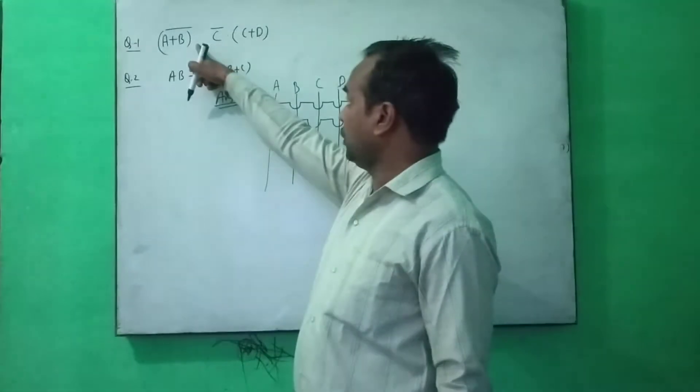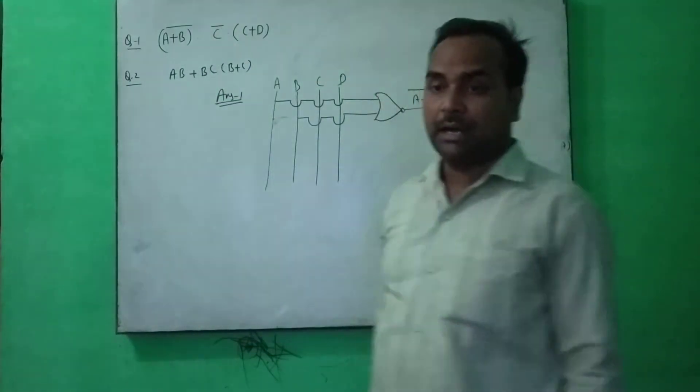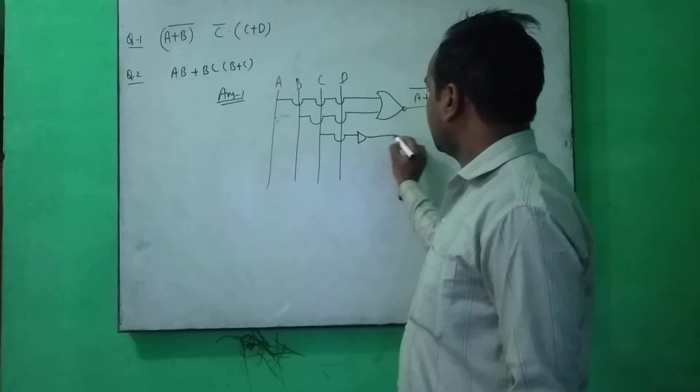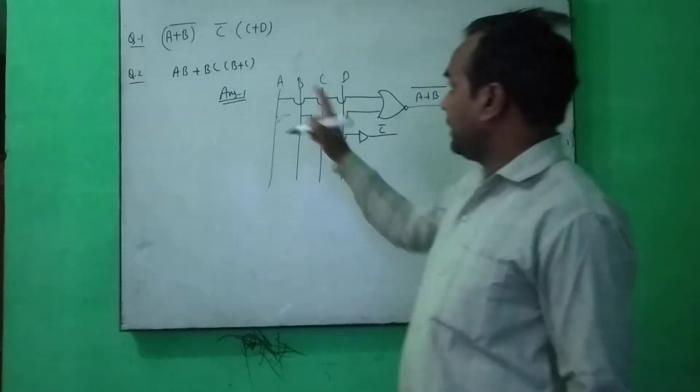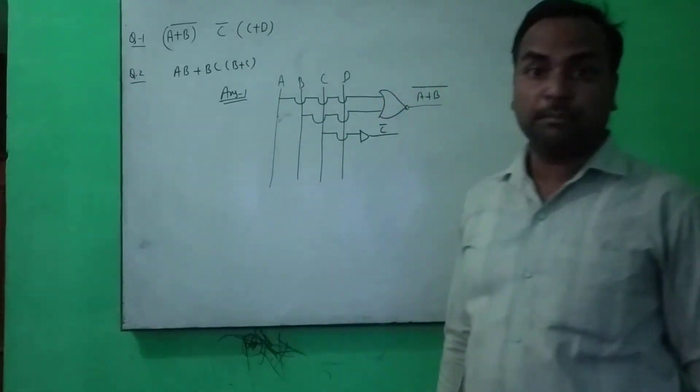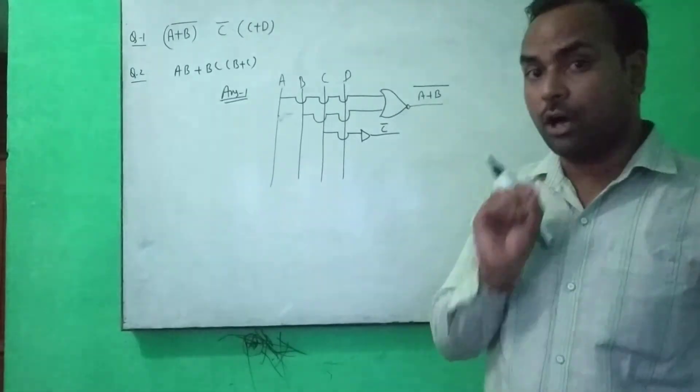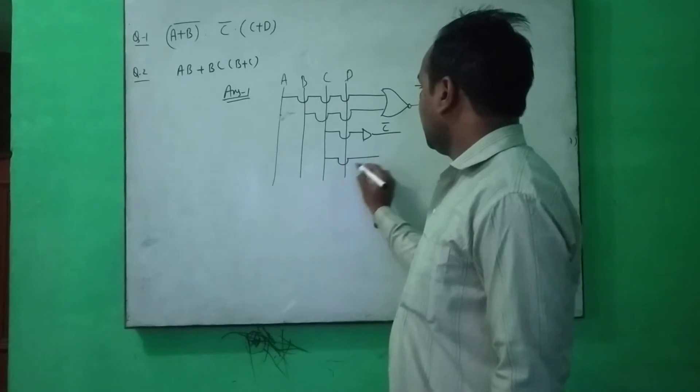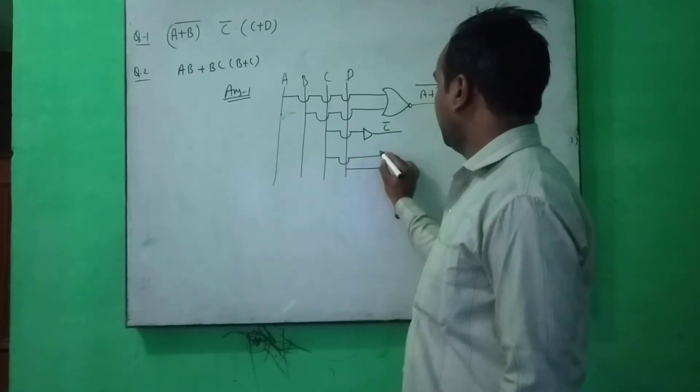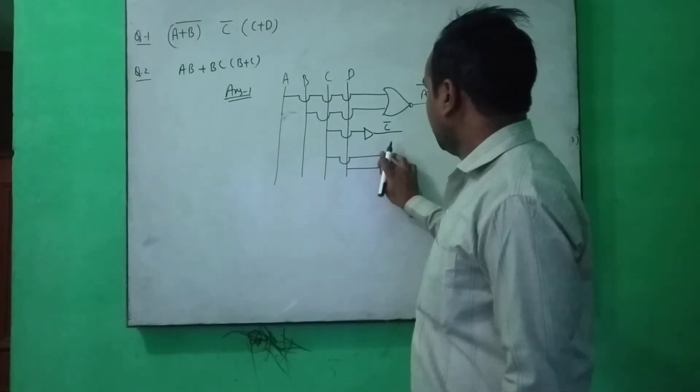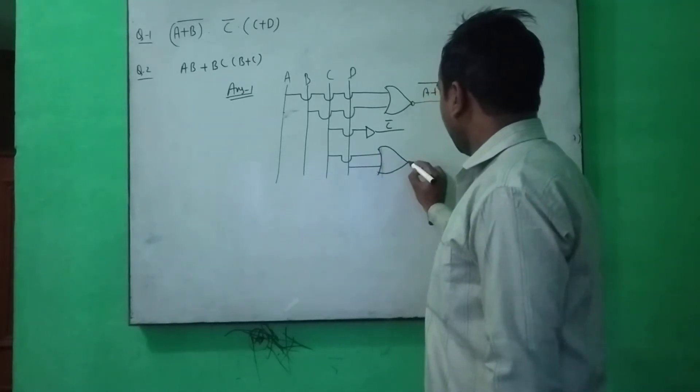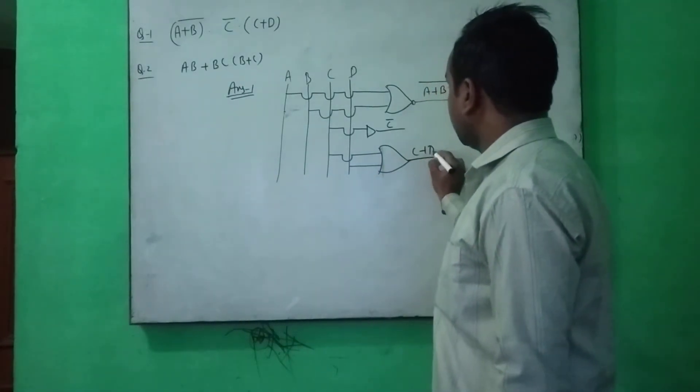Now, dot C bar. For C, this is C bar and last C plus D. C plus D means only OR operation you will have to perform here. So this is C and this is D. OR gate will be here and it will give C plus D.